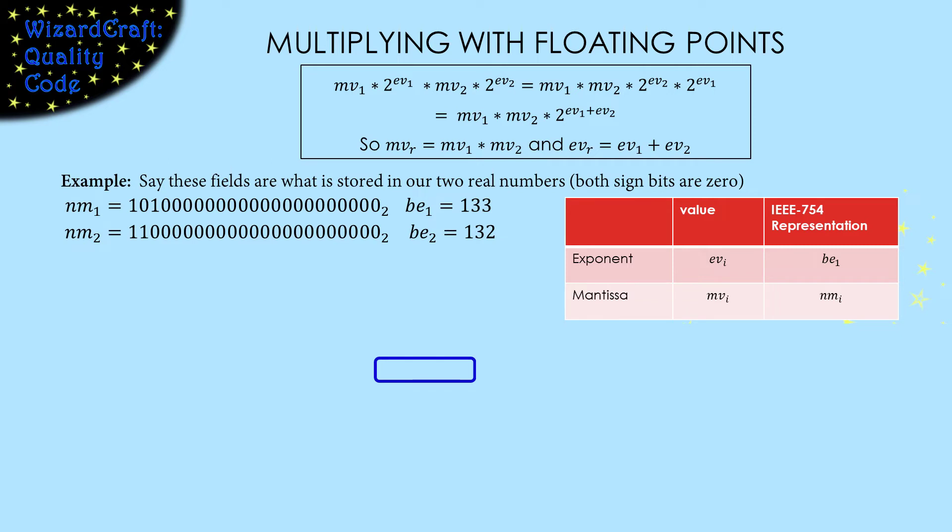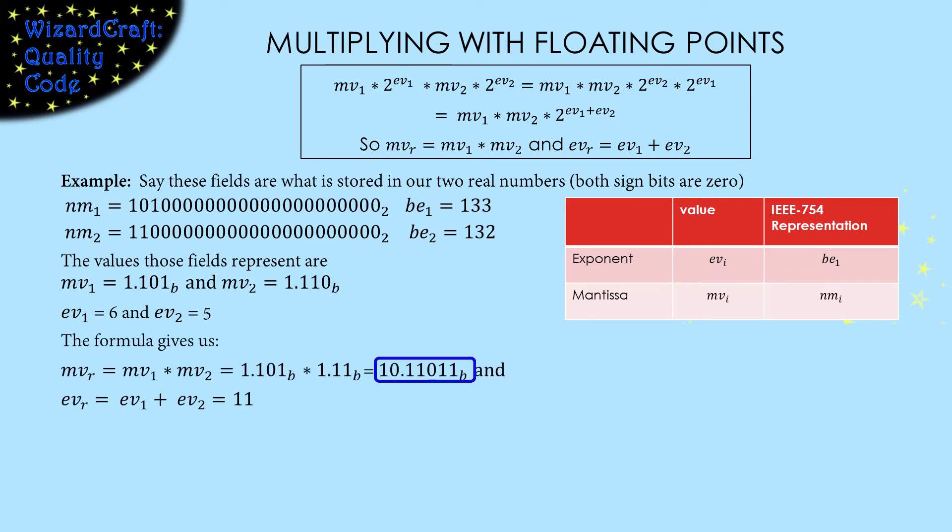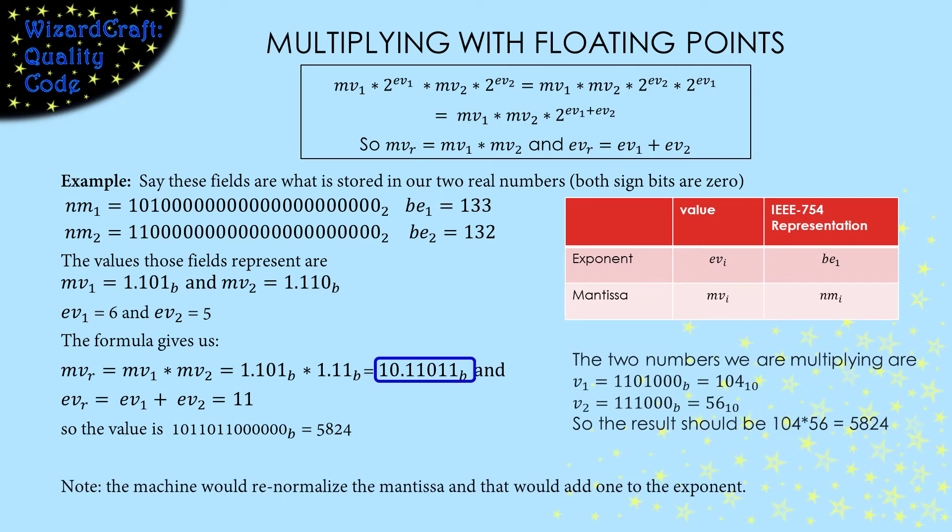Let's look at an example. We're multiplying two positive numbers, and here are the two parts as they are stored in IEEE 754 representation, the normalized mantissas and the biased exponents. We need to convert those to be the values they represent. Put a 1 and a decimal point in front of the normalized mantissa to get its value, and subtract 127 from the biased exponent to get its value. Then, we just have to follow the formula to find the values for the mantissa and the exponent of the result. Use the exponent to shift the decimal point in the mantissa to get the value they represent together. But now, is that right? Yup! One last note. The mantissa we are showing has two digits to the left of the decimal point. The machine would renormalize that and change the exponent to match.